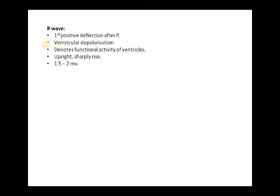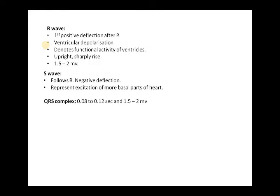The R wave is the first positive deflection after the P wave and represents ventricular depolarization, denoting the functional activity of the ventricles. It is sharply upright at 1.5 to 2 millivolts. The S wave follows the R wave, is negatively deflected, and represents excitation of the more basal part of the heart. Together these form the QRS complex, defined by a duration of 0.08 seconds and amplitude of 1.5 to 2 millivolts.